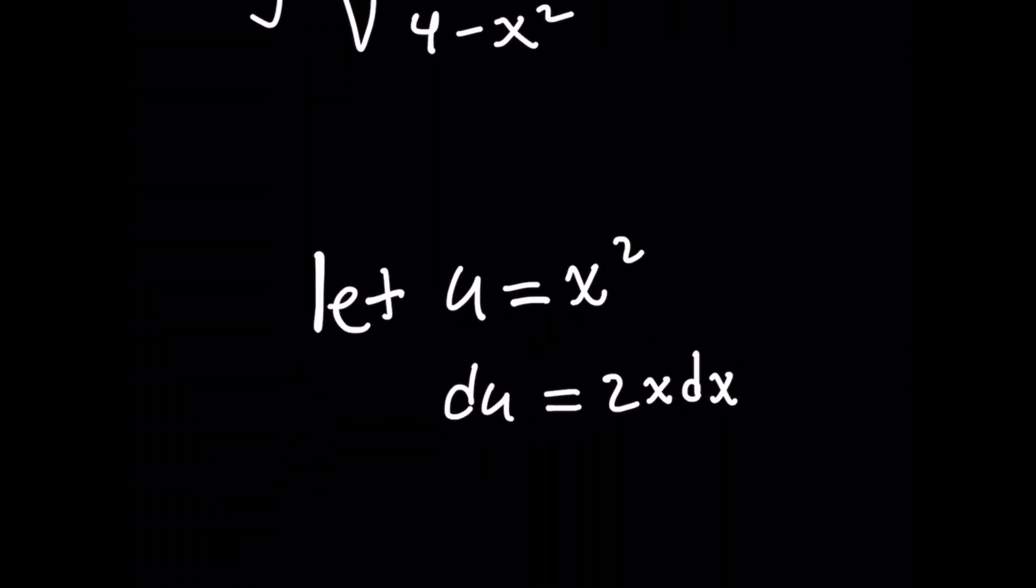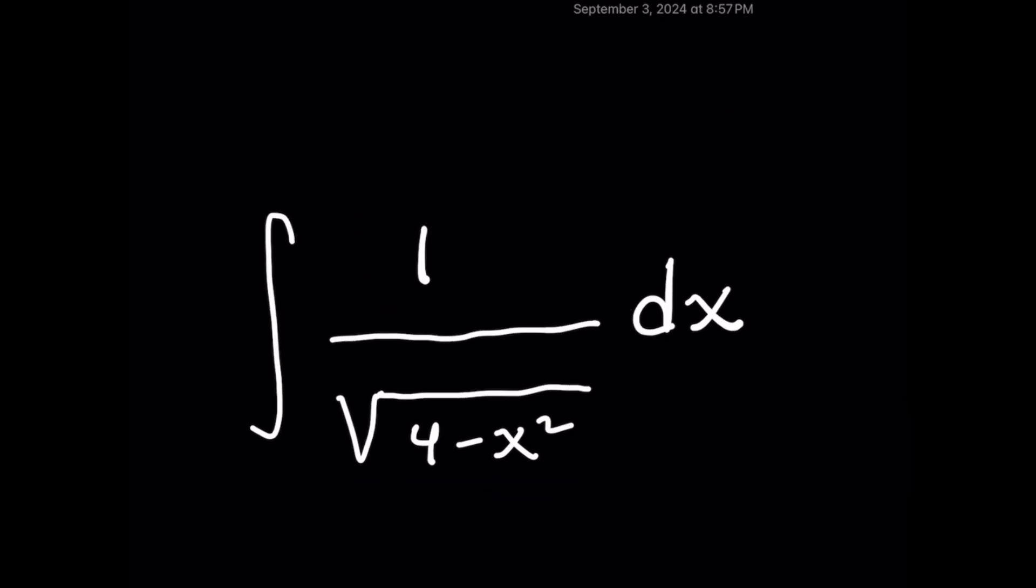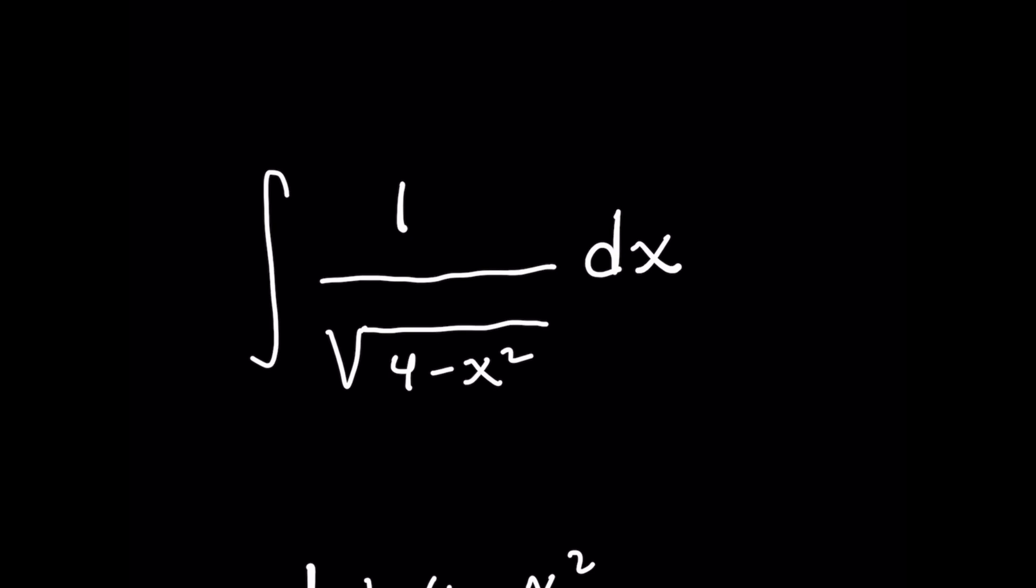a u-substitution and got stuck. When you set u to be x², the problem is that when you take the derivative of both sides, you'll be left with 2x dx on the right. But unfortunately, in the original problem we have a constant on the numerator and not an x, so that doesn't work.